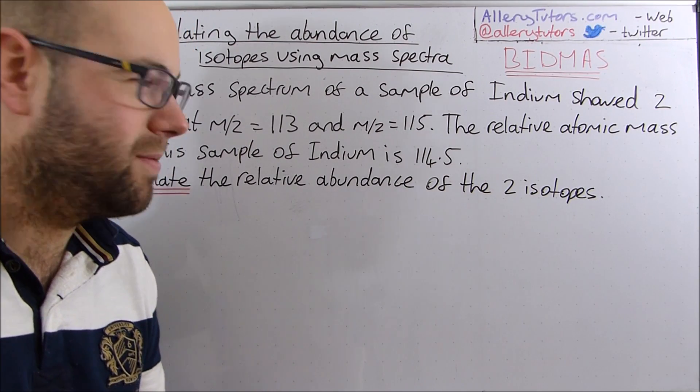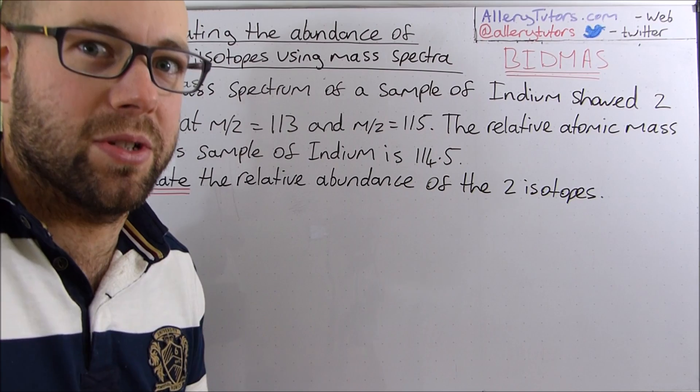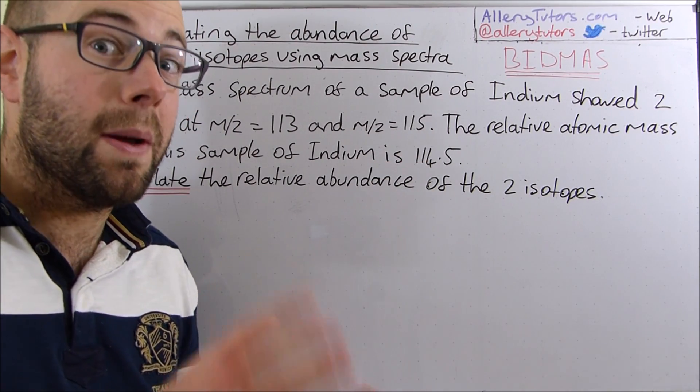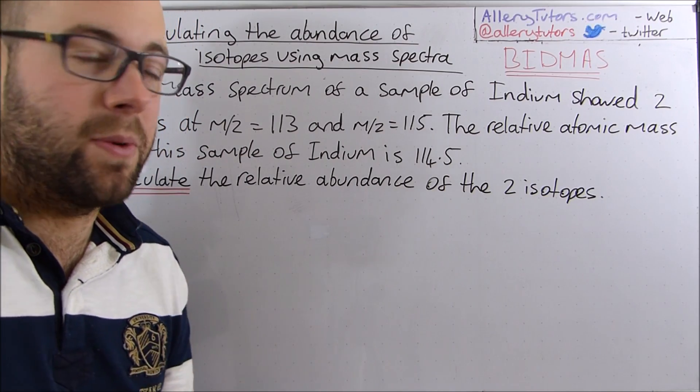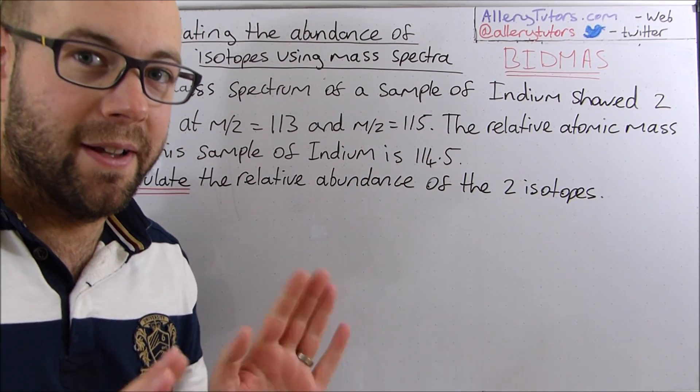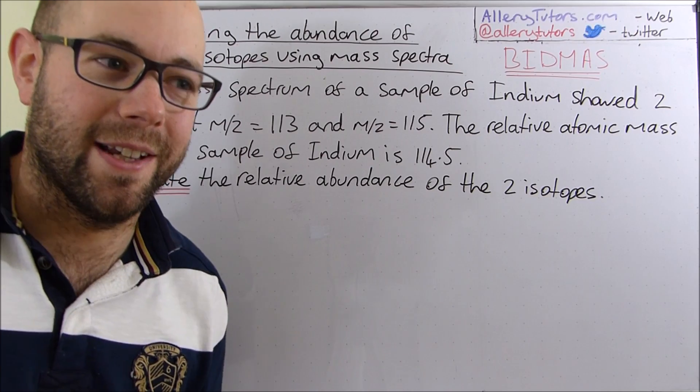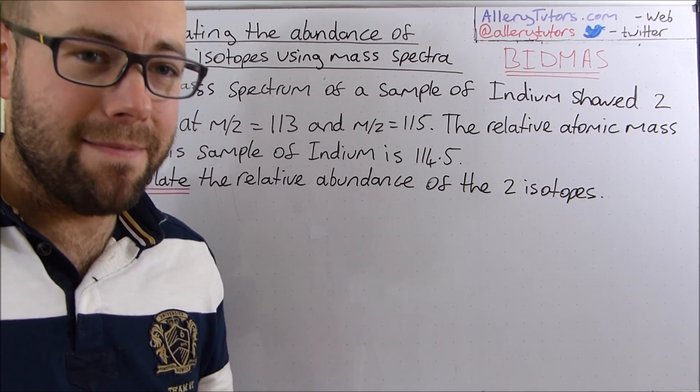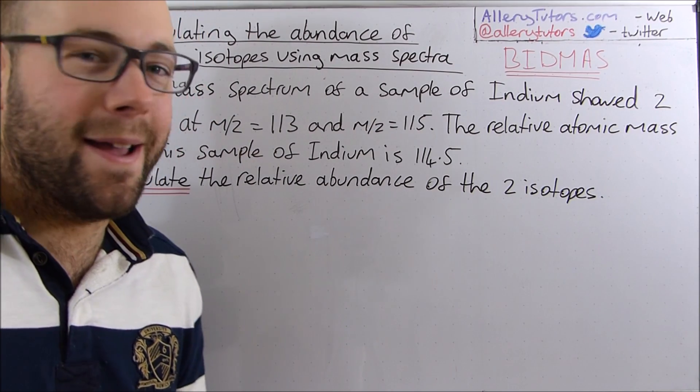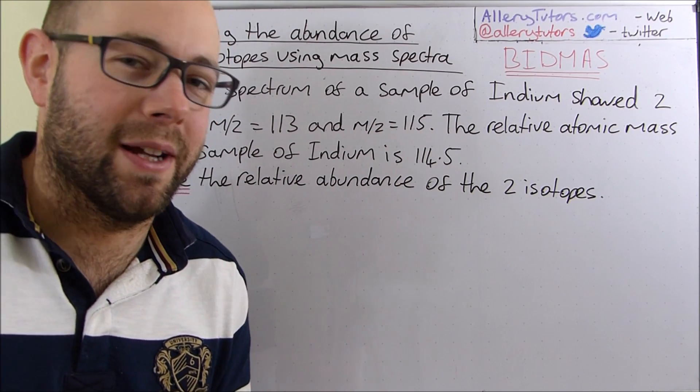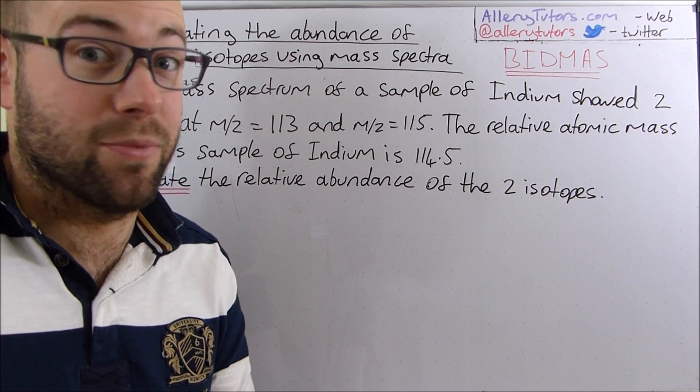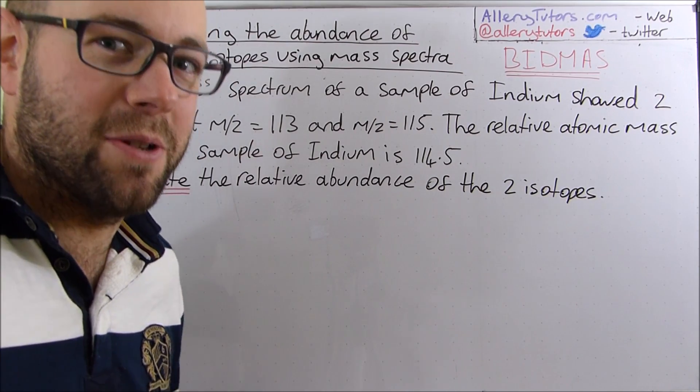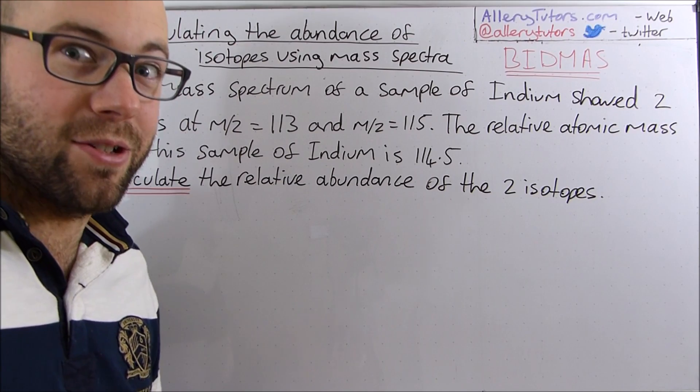This is a bit strange because normally you're given the abundance of the isotope and all you have to do is work out the relative atomic mass. So we're actually just going to do it backwards but there is a little bit of algebra and I'm going to bring in BIDMAS as well. Yes, it's that stuff from GCSE. B stands for brackets, I is an indice, D is division, M is multiply, A is addition and S is subtraction. There's a little bit of GCSE maths here as well but it shouldn't be too bad.